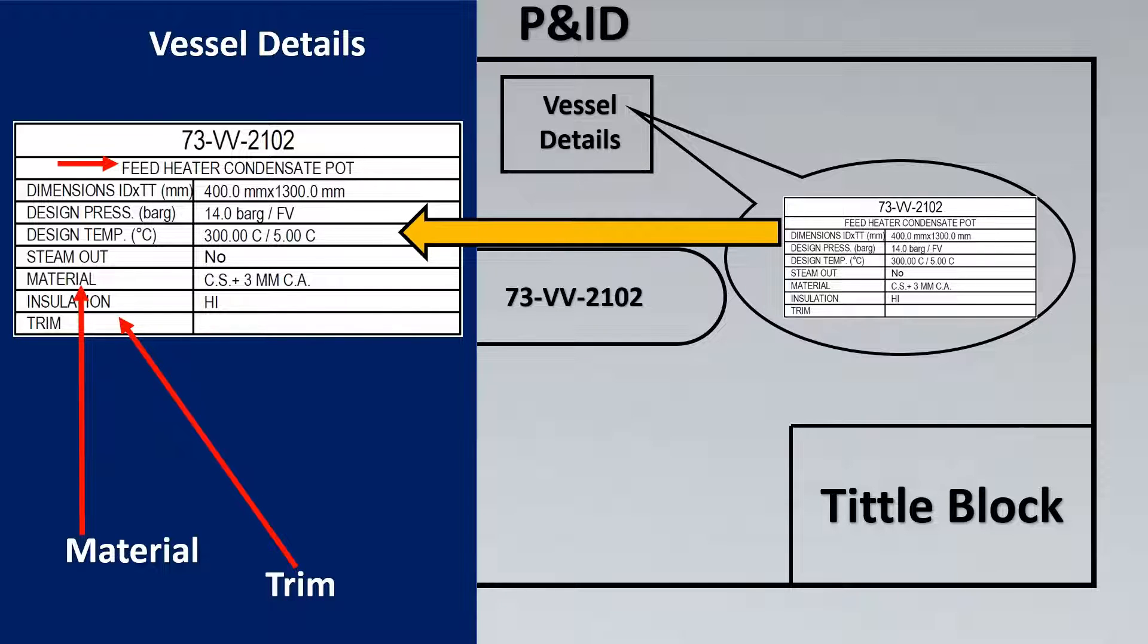Then you have something called trim material. This is for the sensitive parts. For example, your valve trim has to be more superior than your body material at times. So sometimes the trim material is mentioned, maybe it could be stainless steel or hastelloy, etc.